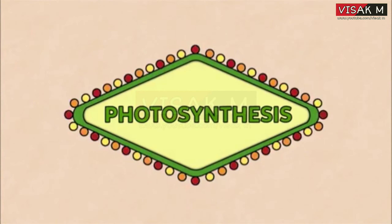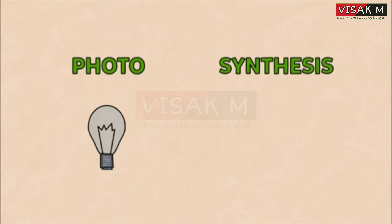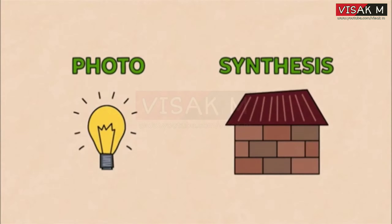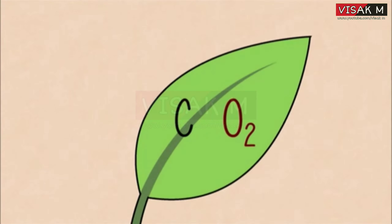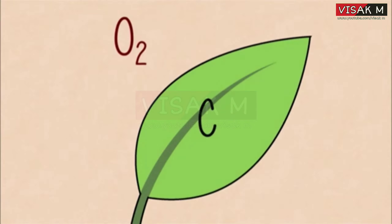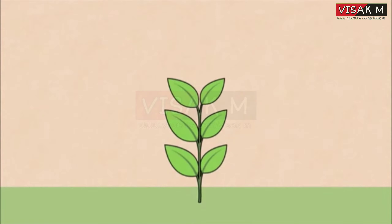It is photosynthesis. Photo means light, and synthesis means building up. However, in its simplest terms, we are actually breaking carbon dioxide apart, releasing the reactive gas oxygen into the environment, allowing the carbon to be captured by the plants to build up their structures as they grow.